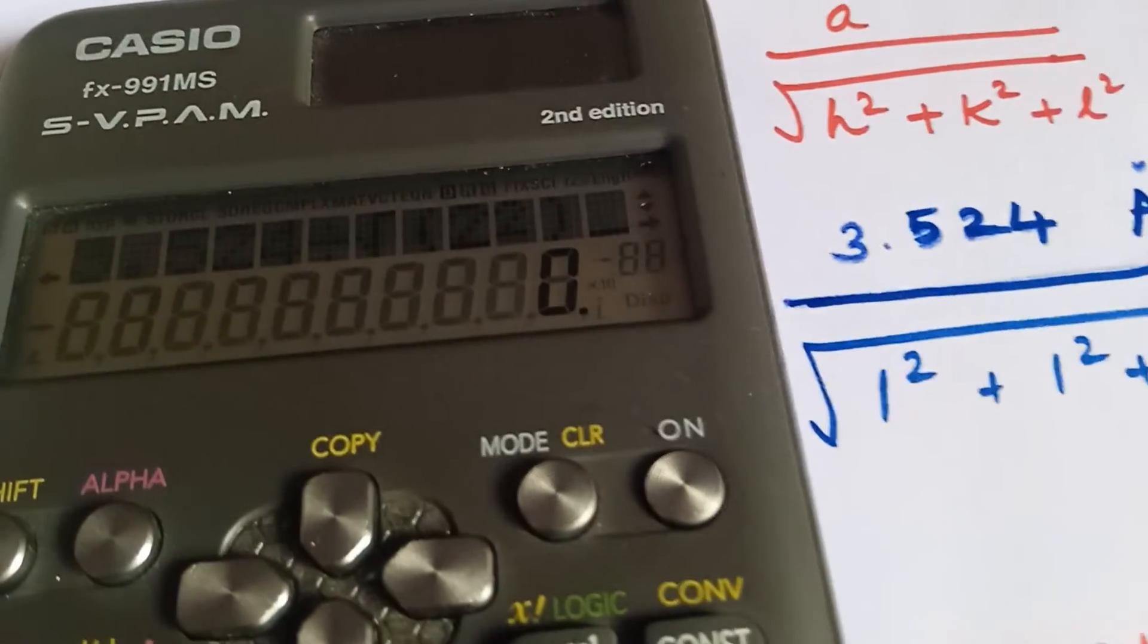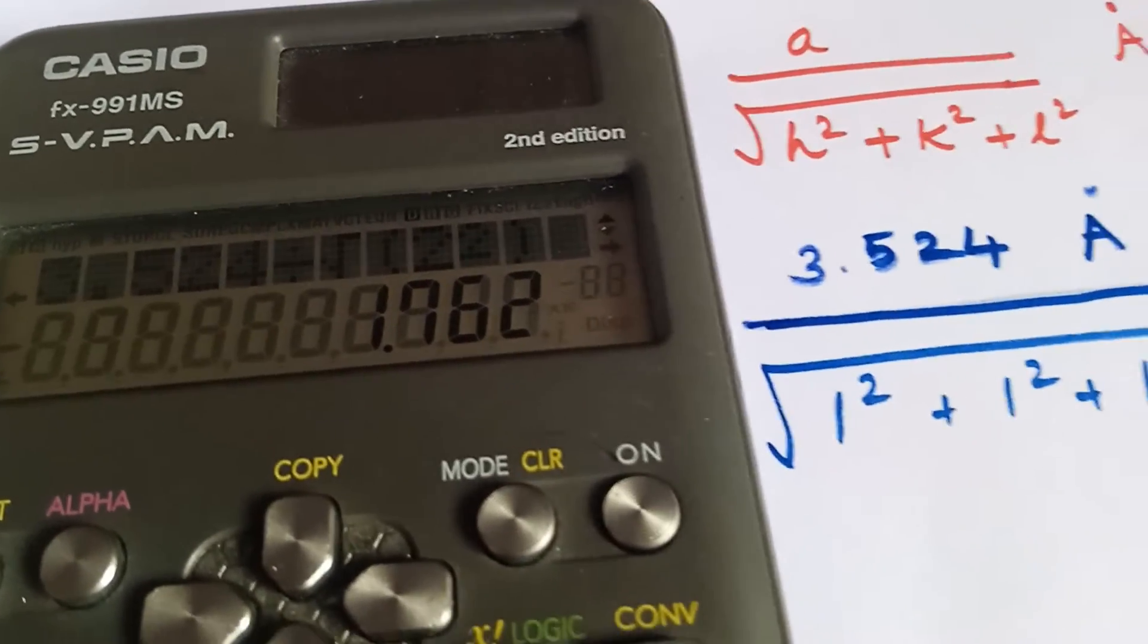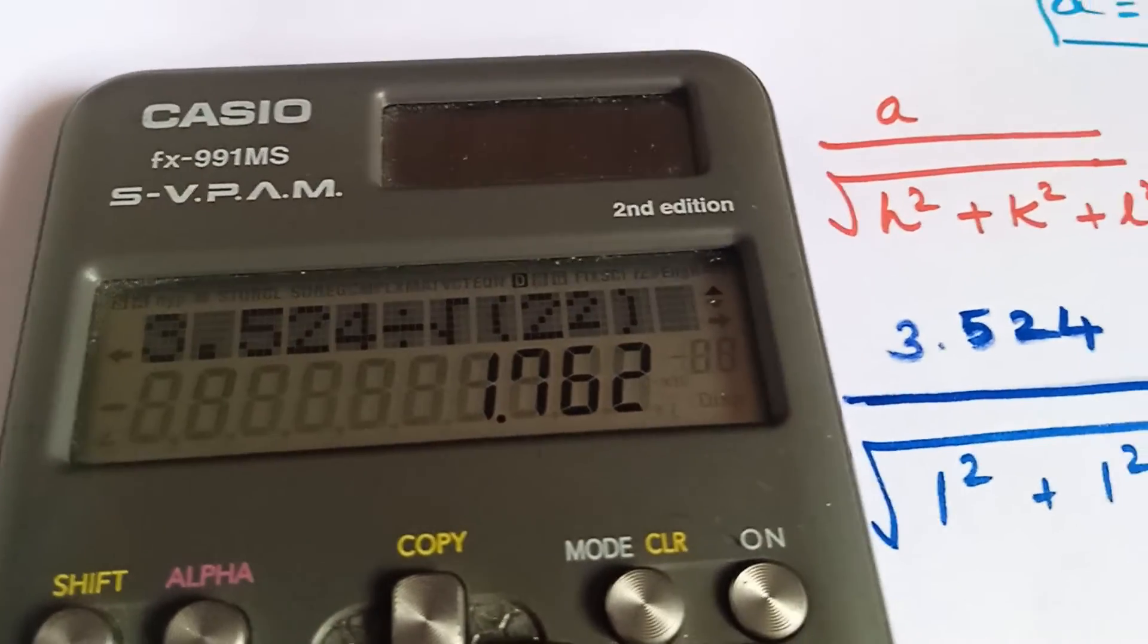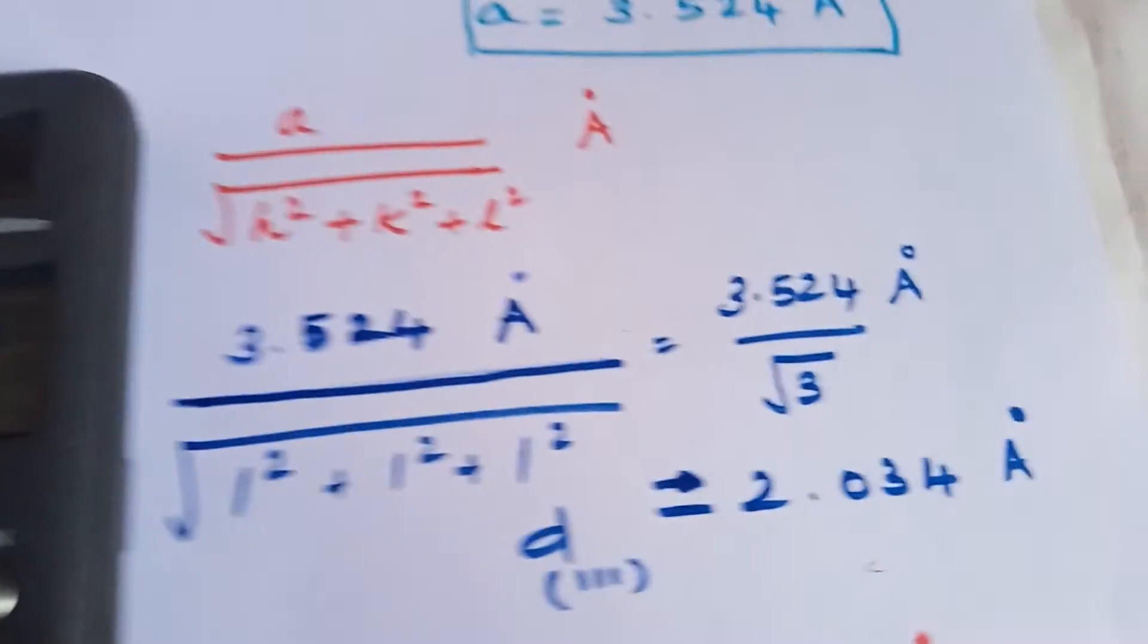Closing it with a bracket, I get 1.762. So, I am writing it as 1.762 angstrom unit.